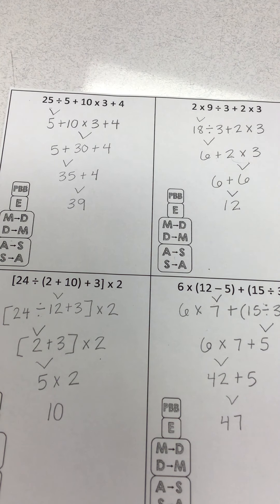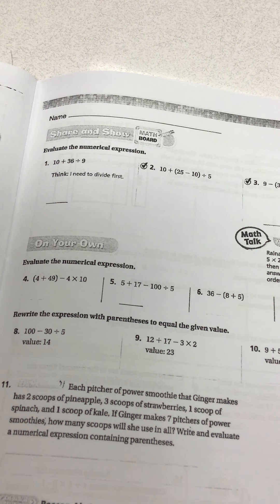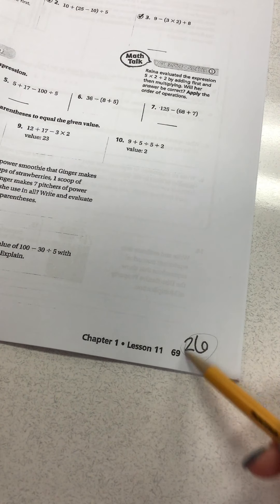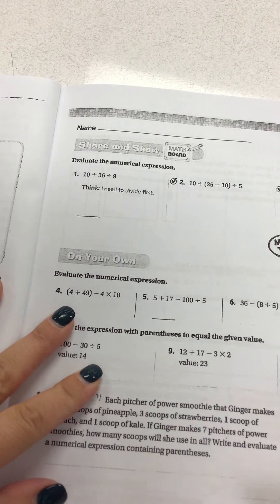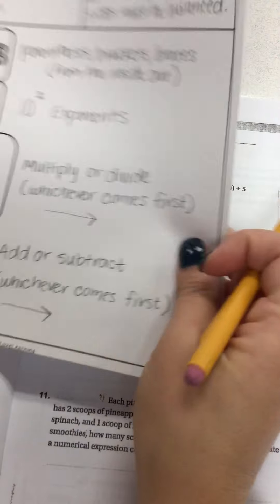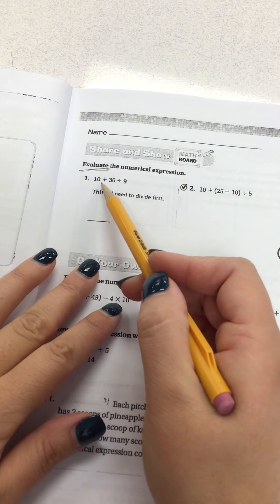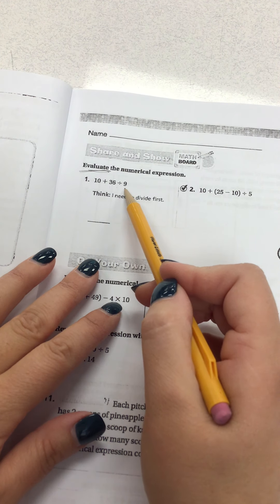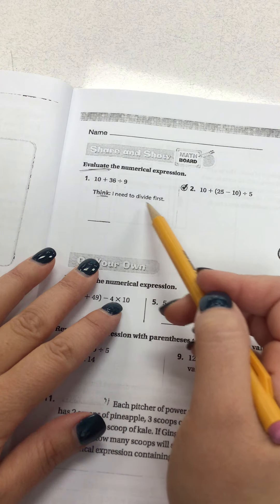So I'm going to do a few with you on 26 and then I'm going to let you work independently. So this is page what I marked as 26 or 69 in your booklet. It says evaluate the numerical expression. Evaluate means solve. So have your little chart out next to you and use it to refer to. So I have 10 plus 36 divided by 9. The first thing and they kind of give you a hint right here. I need to divide first.